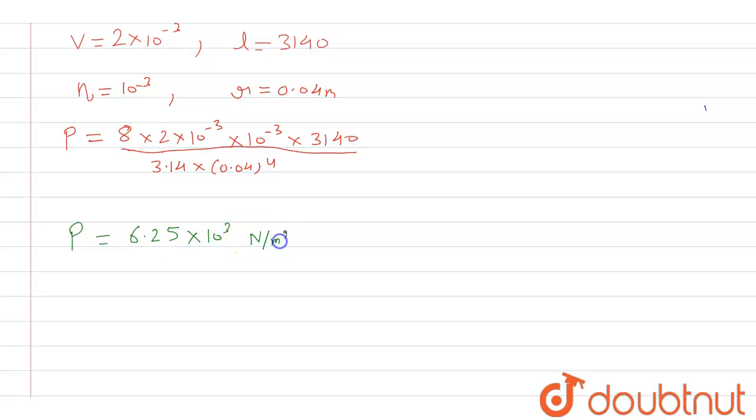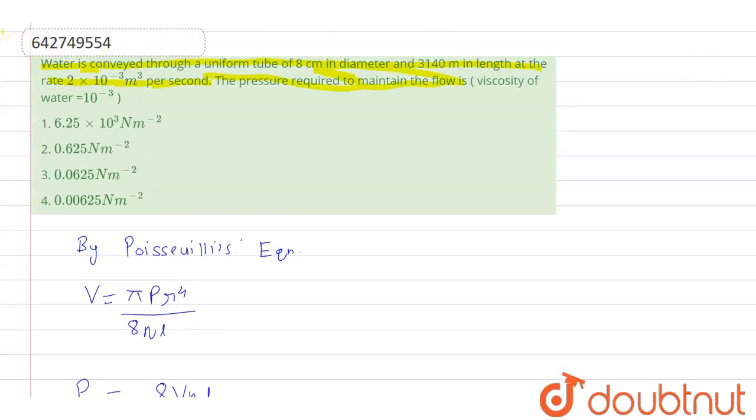So when we move towards the options and try to match with the option, that match option will be option number one that is saying 6.25 into 10 raised to the power 3 newton per meter square. So this is about this question, thank you for watching.